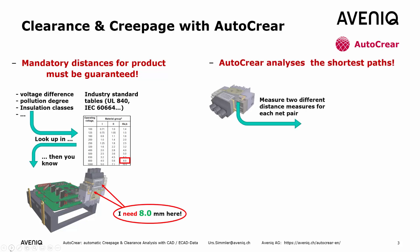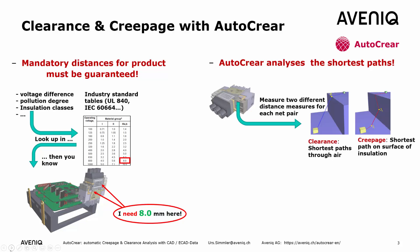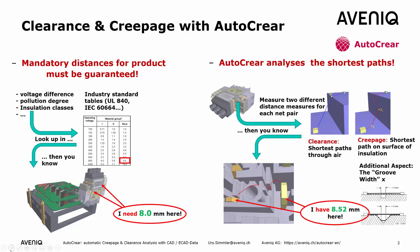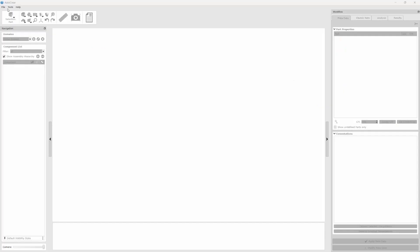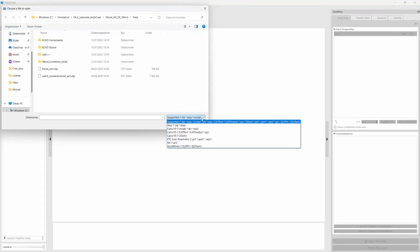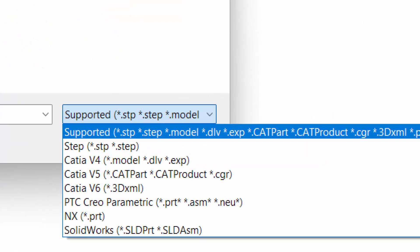You can check them by hand, but the tool does that automatically for you. It also takes into account the aspect of groove width. AutoCREEPER imports all kinds of 3D data, like NX, Creo, and CATIA.